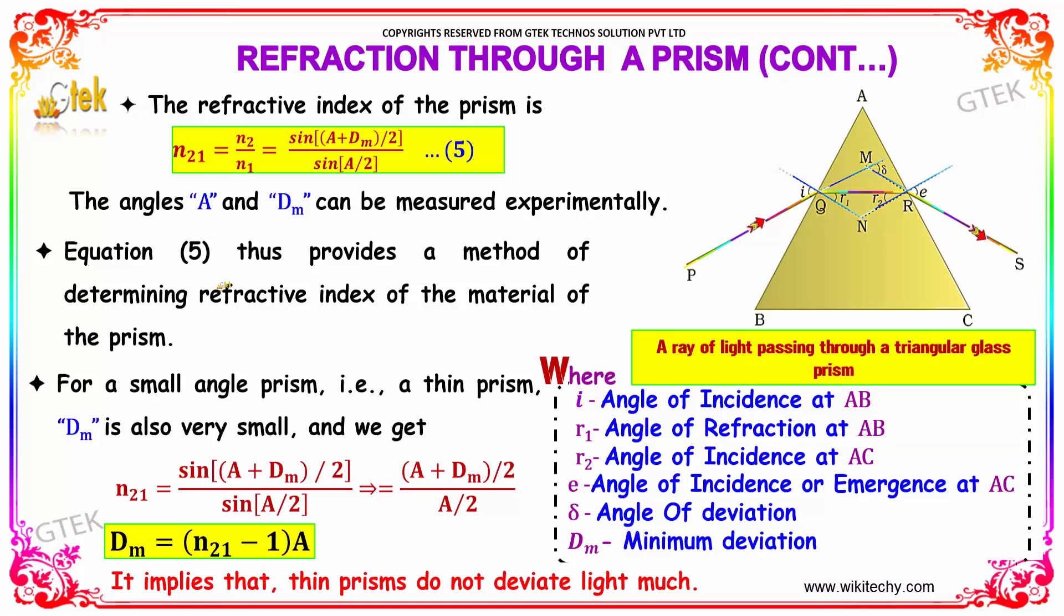Equation 5 thus provides a method of determining the refractive index of the prism. For a small angle prism, a thin prism, dm is also very small, and we get n21 replacing sine, you get A plus dm by 2 divided by A by 2. So dm equals n21 minus 1 into A. It implies that thin prisms do not deviate light much.